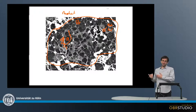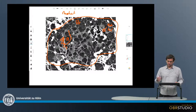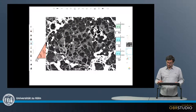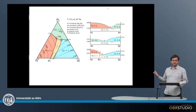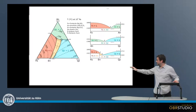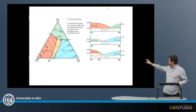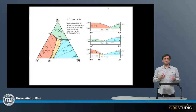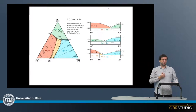Chondrules are therefore mafic systems. They are also often quite magnesium-rich, with in cases up to forsterite 99. So if you want to understand the cooling of chondrules, it is helpful to look at the according phase diagrams. This is one phase diagram well-suited to look at chondrule crystallization — it is the forsterite-anorthite-quartz ternary. To the right here are the binary phase diagrams constituting the three sides of this ternary phase diagram.